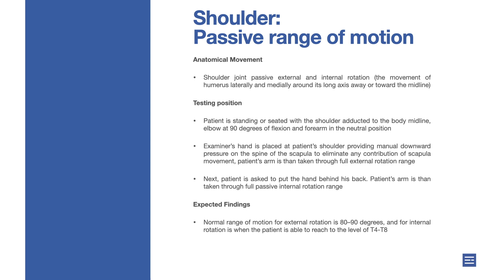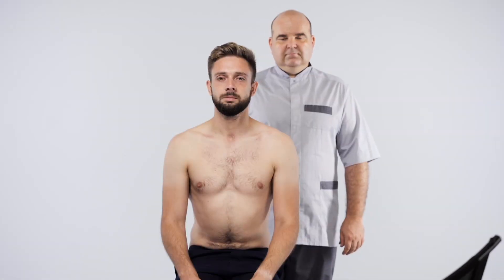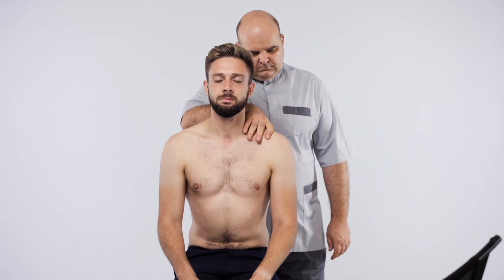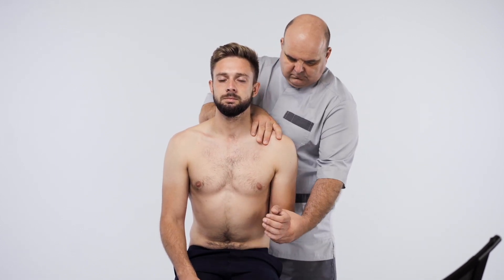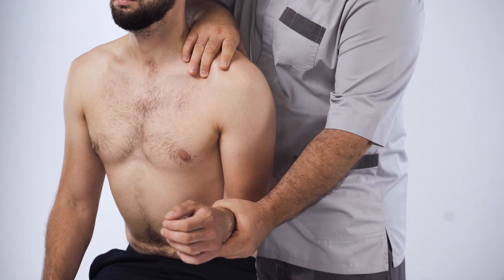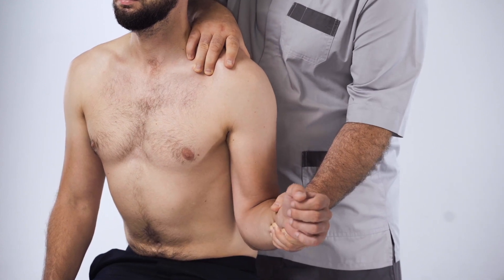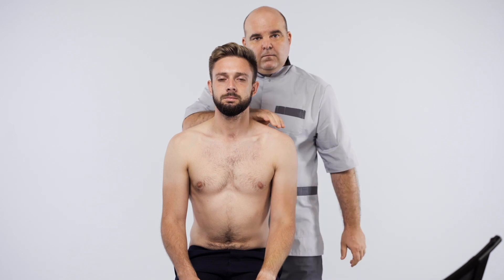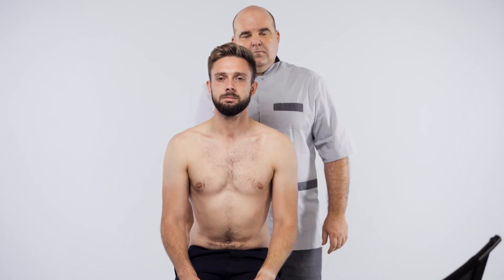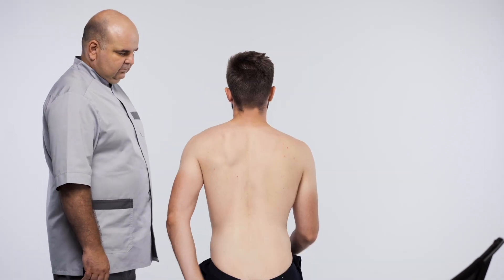The examiner's hand is placed at the patient's shoulder providing manual downward pressure on the spine of the scapula, to eliminate any contribution of scapula movement. The patient's arm is then taken through full external rotation range. Next, the patient is asked to put the hand behind the back, and the arm is taken through full passive internal rotation range.